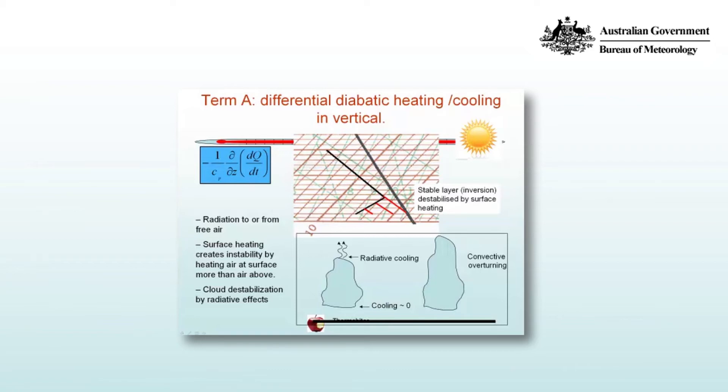Which means over time the lapse rate is increasing, or the temperature at the top is decreasing with respect to the bottom of the cloud. And so you're destabilizing the cloud layer and leading to convective overturning and an increased depth of the cloud.